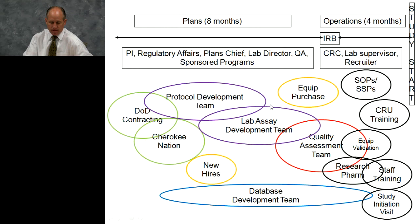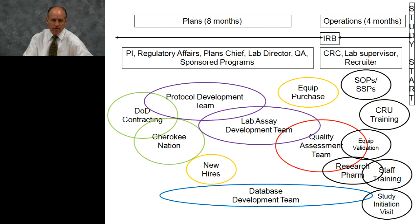The take-home message is that you have to understand the issues. You have to understand there's a storm before the calm. The best part of the entire process is when finally you say, let's start the study. Up until then, you just have to accept you're going to be pulled in a thousand different directions, and there has to be a focal point for some semblance of organization and meeting your suspenses. So we broke it up into a plans section and an operations section — old army terms. The plans portion was designed to be about eight months long, and the operations section about four months long, with the handoff between them right around the IRB.